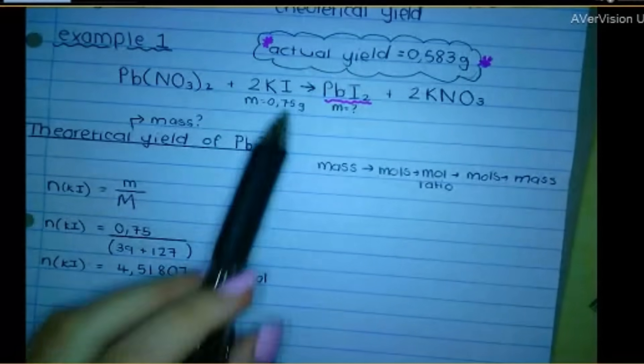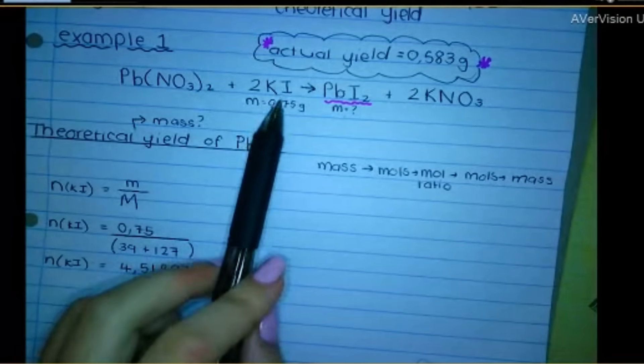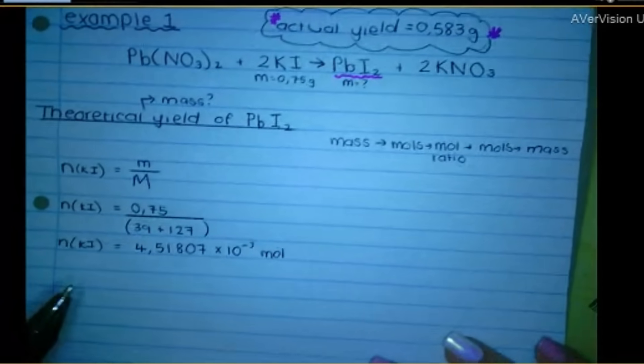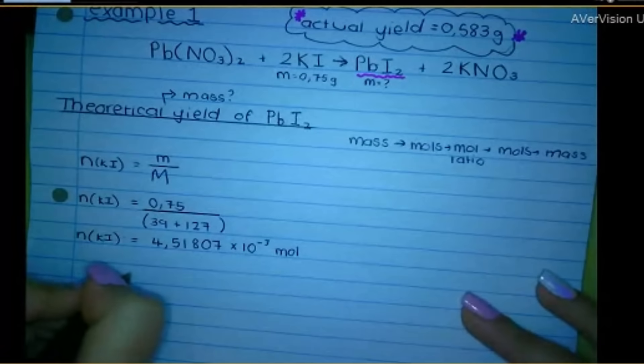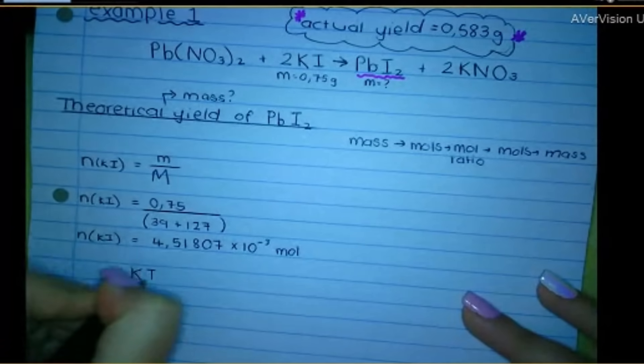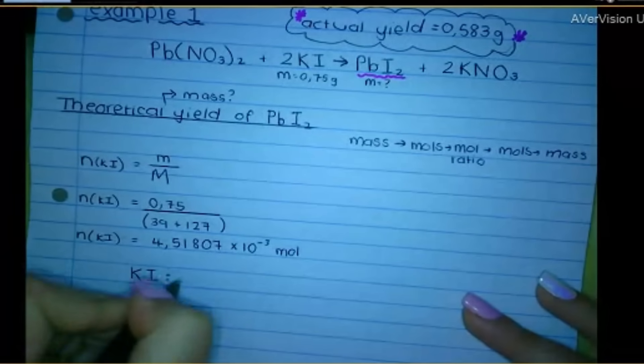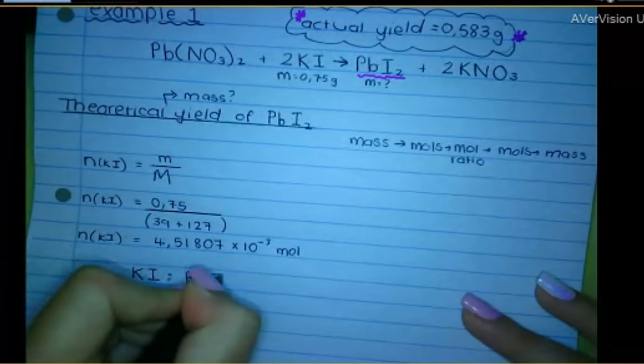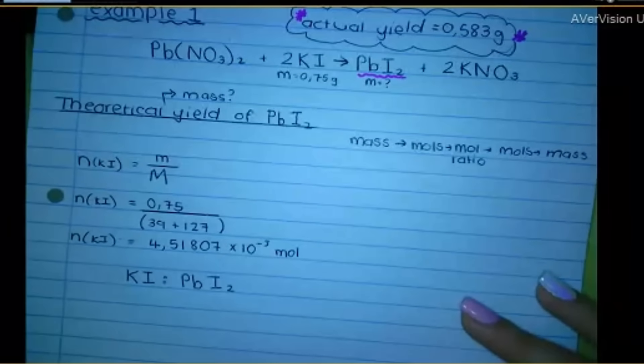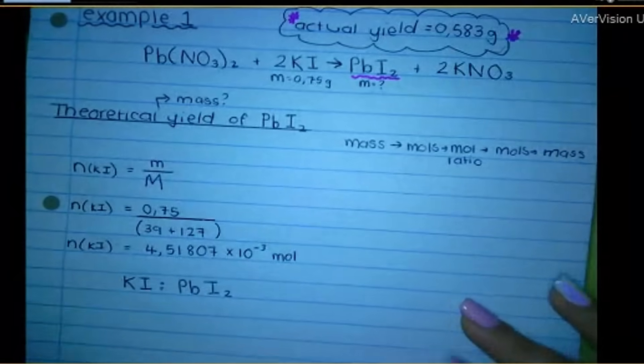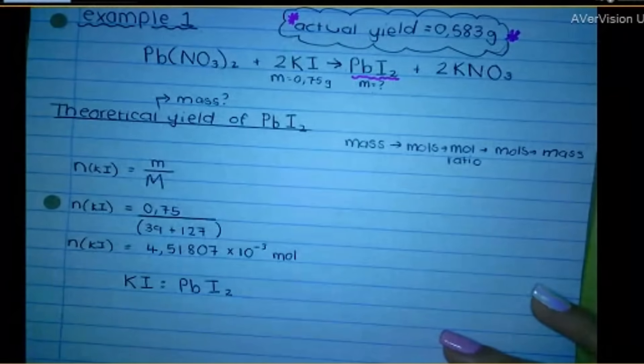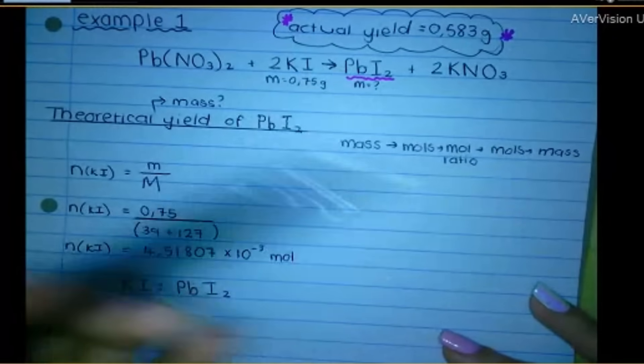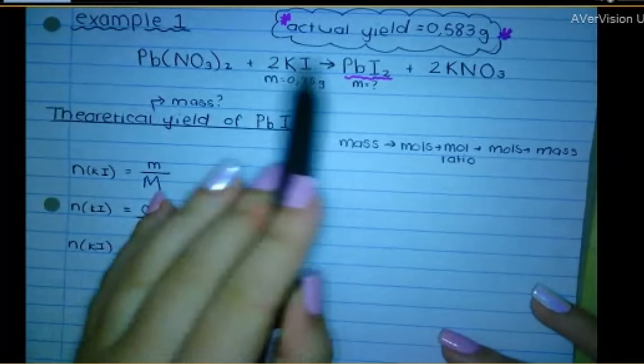Okay. So they gave me the mass of this. So I worked out the moles of this. Next step is to use the mole ratio because I need to get to this guy over here. So I started with KI. I'm trying to get the moles of PbI2. This is a balanced equation. So I know that I can go ahead. The mole ratio is two to one.